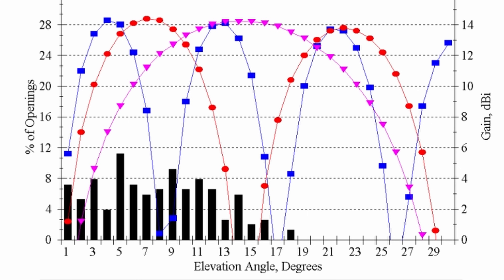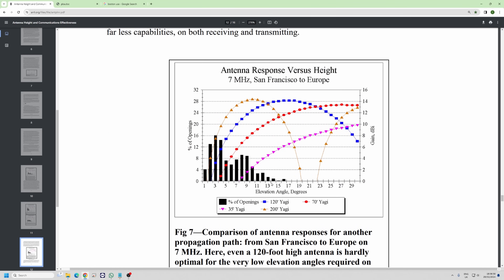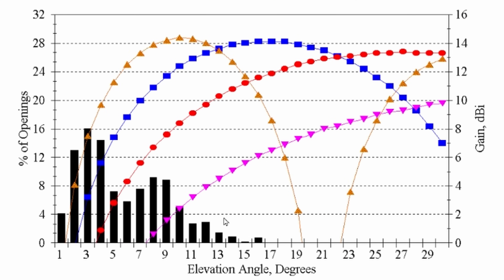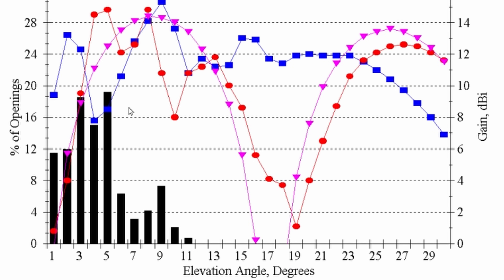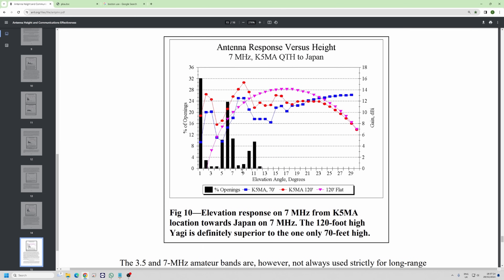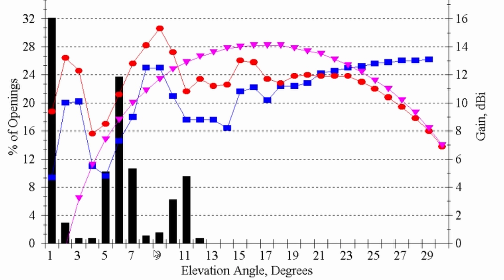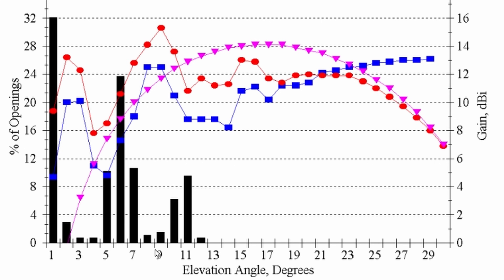On 28 MHz Boston to Europe, that hop is anywhere between one and 17 degrees. On 7 MHz, San Francisco to Europe — a big hop of around 3,500 miles — it's basically all 10 degrees and under, though the 80-meter band can sometimes see long DX as high as 20 degrees. Another path to Japan shows the majority under 10 degrees, and on one graph 32% of the time DX was arriving at one degree off the horizon. On 40 meters, your signal travels straight through a house easily.